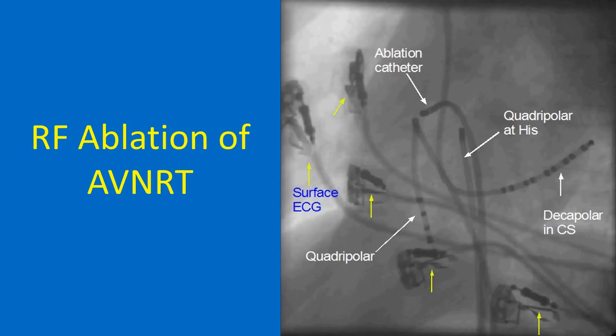Electrophysiology catheters are shown in left anterior oblique view. The surface ECG electrodes are marked with yellow arrows. The decapolar catheter is situated in the coronary sinus, introduced from above via jugular vein puncture. The electrodes are numbered 1 to 10 in distal to proximal fashion, so the distal pair is 1,2 and the proximal pair is 9,10.